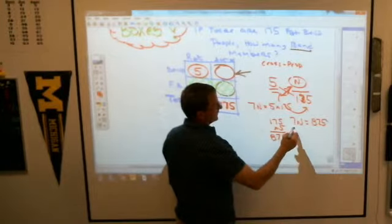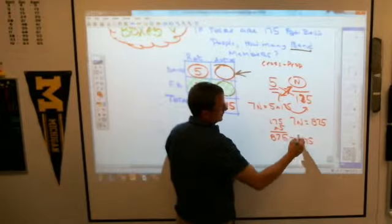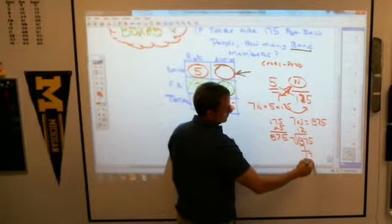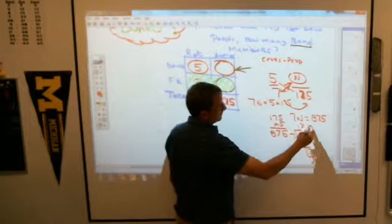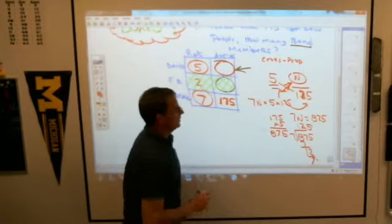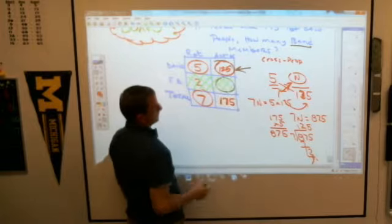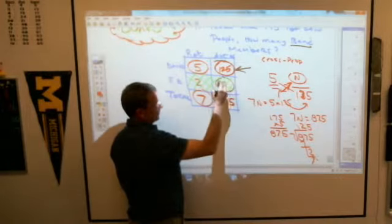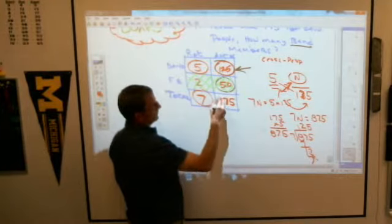So seven times what number is 875? You're going to have to divide that out to figure out what it is. It looks like 1, 2, 35, 5. 125 band people. Which would mean there would be how many football players? 50. How do I know that? Because 125 plus 50 is 175.